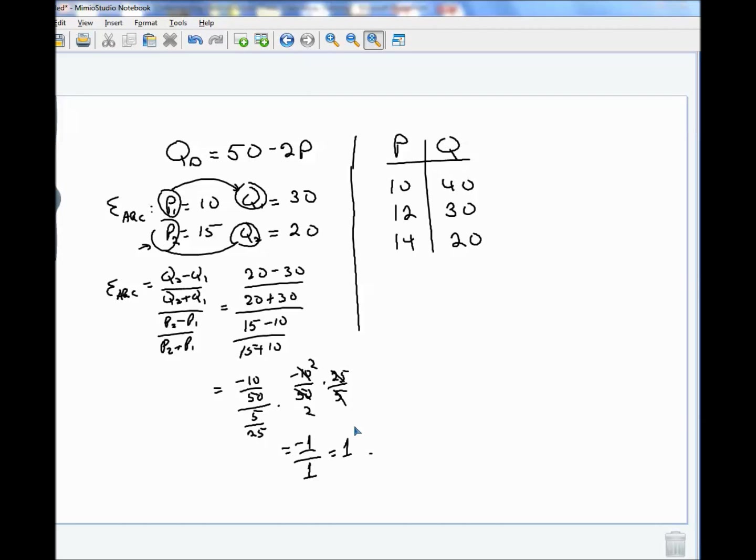Well, that's kind of a special case. But there it is. Our elasticity is minus 1. All right. Now let's try one from a table of numbers. Suppose I ask you to calculate arc elasticity from P is 10 down to P is 14.